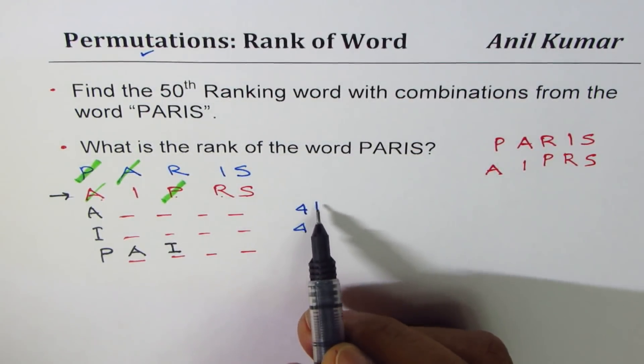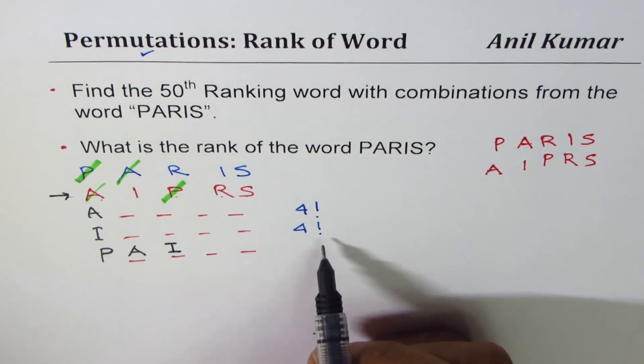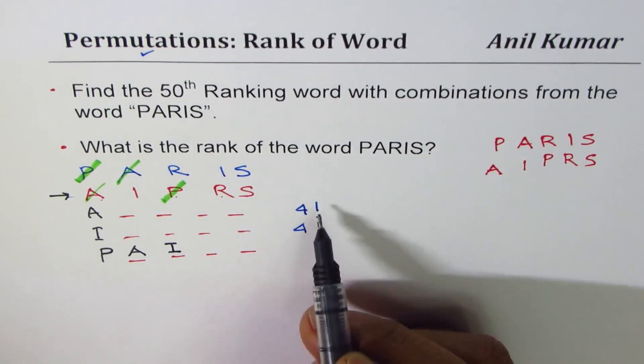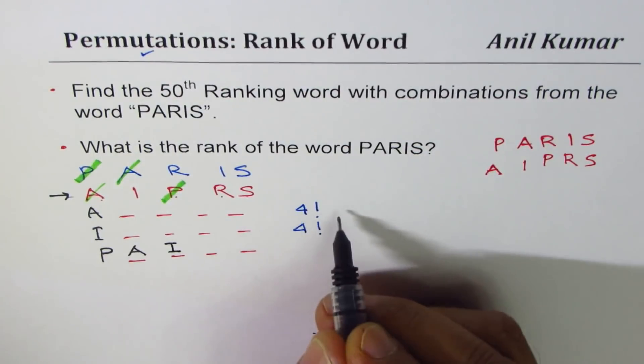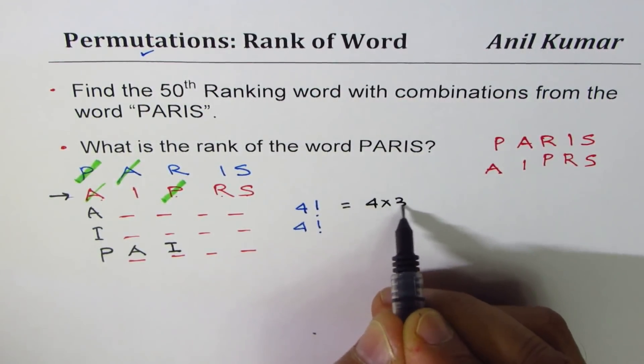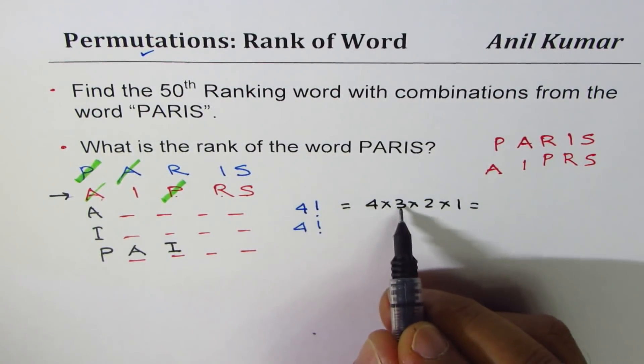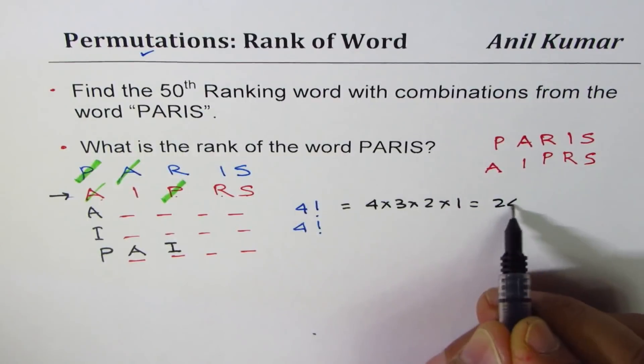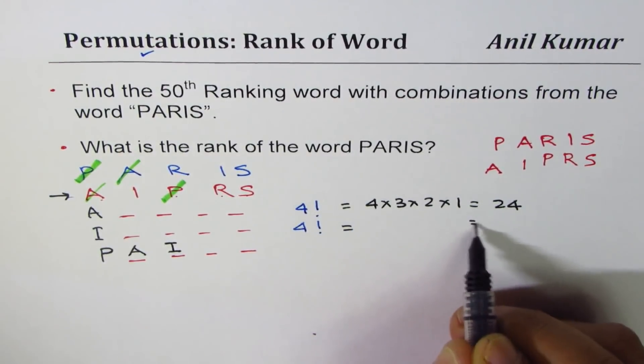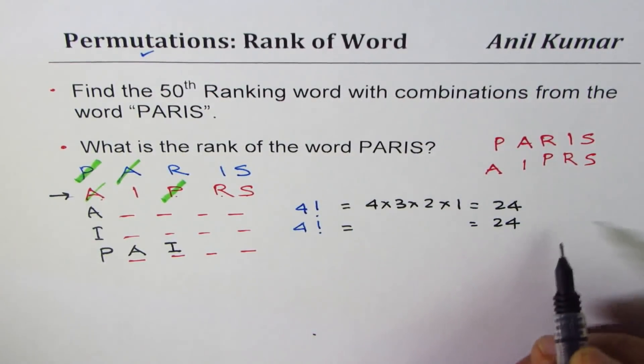...it's good to keep a count on how many words are already counted. 4 factorial means 4 times 3 times 2 times 1, which is 4 times 3 is 12 times 2 is 24. So this is also 24. So we have a count of 48 already.